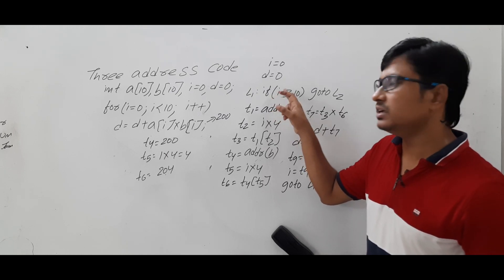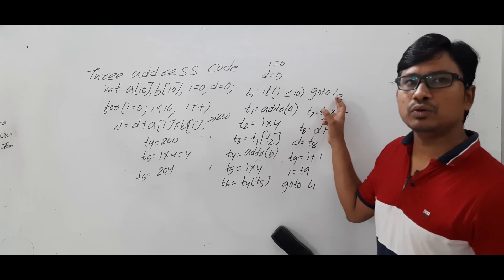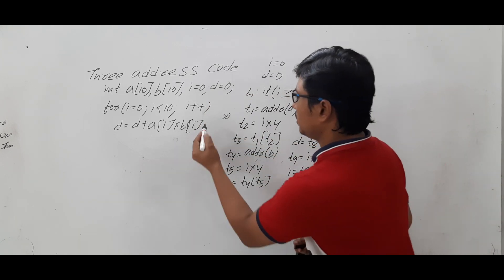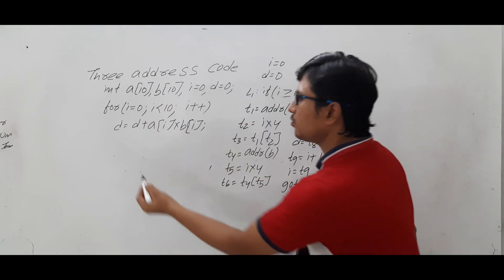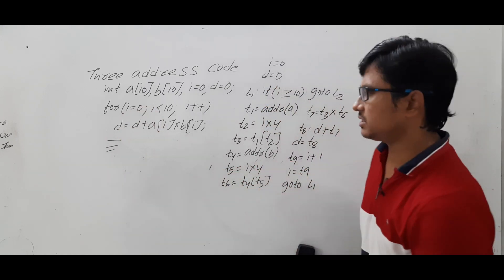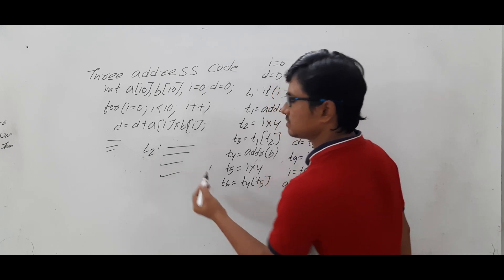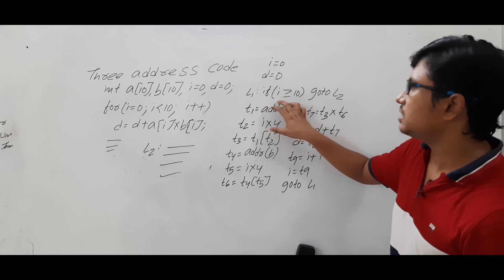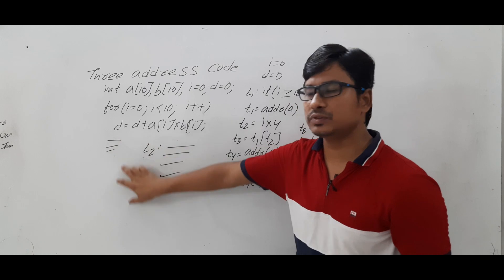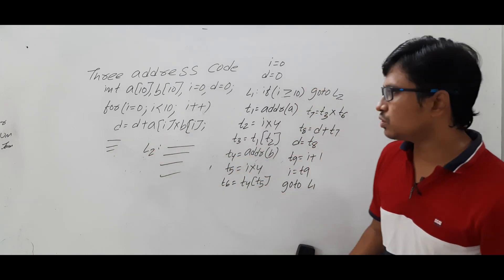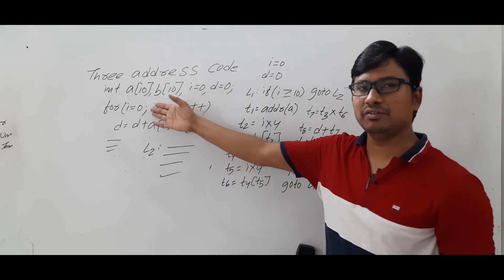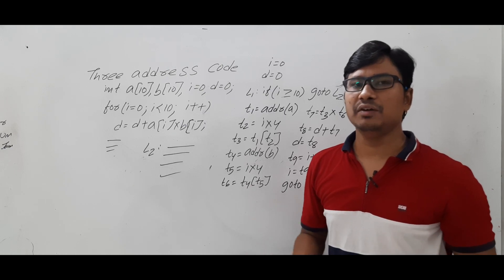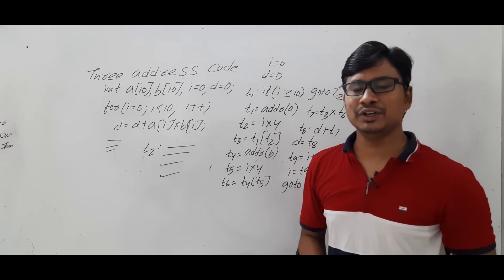When i = 10, the condition i >= 10 is satisfied and we goto L2. At label L2, any instructions after the for loop are written and executed. So if the condition inside the loop fails, we execute the loop body; once the for loop condition is satisfied, we jump to L2 and execute those statements. I hope you have understood the three address code and how to convert a high level language to its equivalent three address code. Feel free to ask doubts in the comment section. Thank you for watching. Have a nice day.